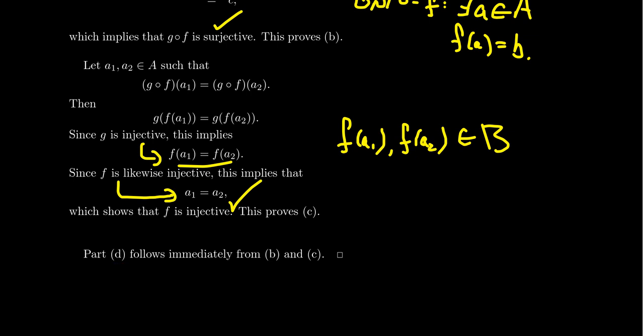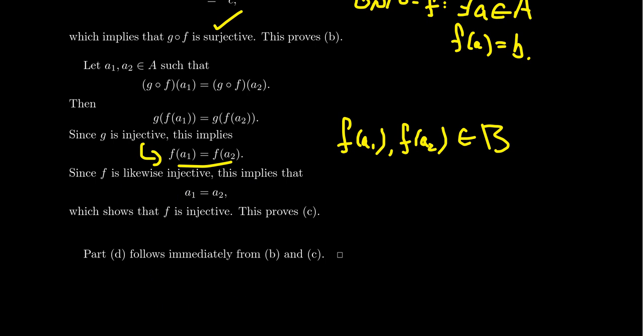The proof of part d is straightforward. To show g∘f is bijective when f and g are both bijective: since they're both bijective, they're one-to-one and onto. By part b, since both are onto, the composite is onto. By part c, since both are one-to-one, the composite is one-to-one. Therefore the composite is both one-to-one and onto, making it bijective. That gives us our lesson on composition of functions. Hopefully the discussion about surjective and injective compositions was beneficial. Please like, subscribe, share, and post any questions in the comments.